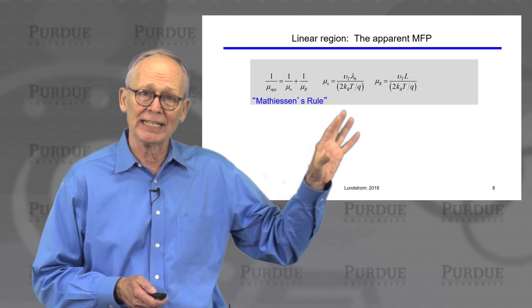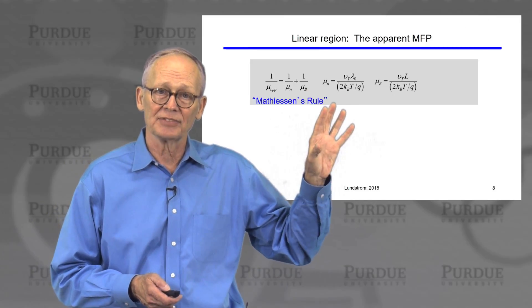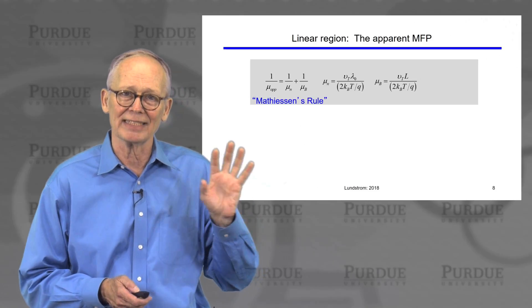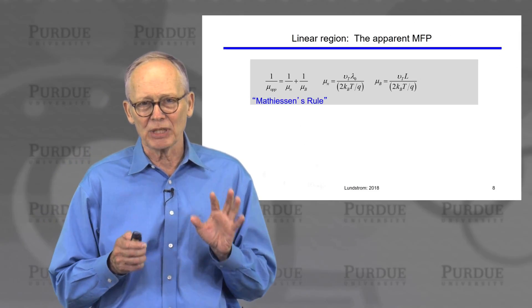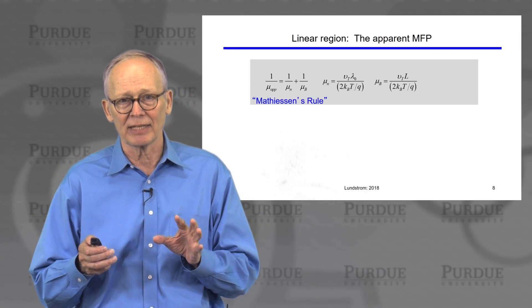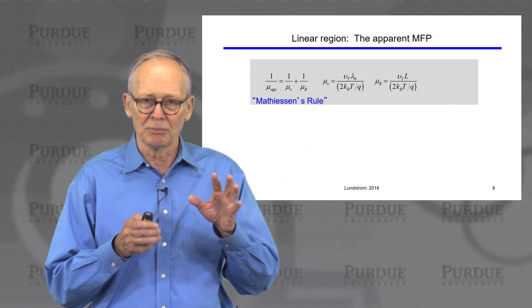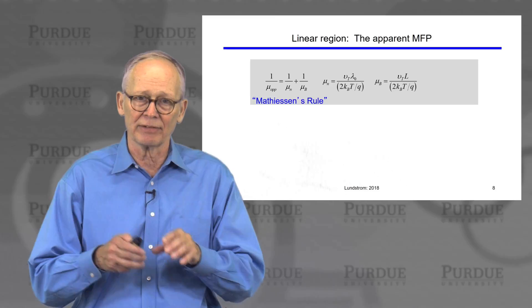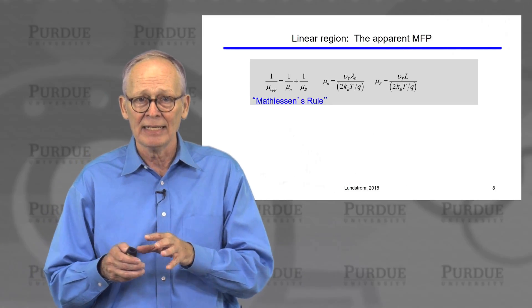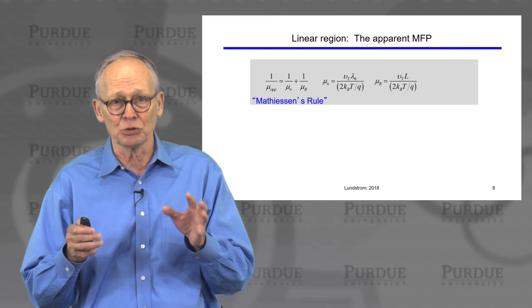Now this particular way of combining mobilities, some of you will have seen this before. It looks like Mathiasin's rule. And it is frequently used in bulk semiconductors when you have two different scattering processes. So you combine, say, lattice phonon scattering with ionized impurity scattering, and you want the net mobility due to these two processes.